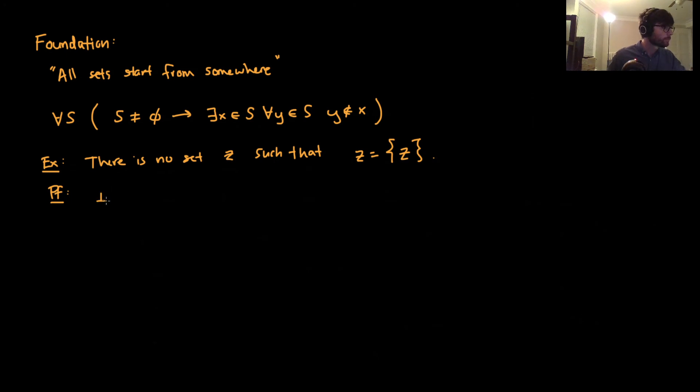Well, if there were, then we could apply foundation to the set Z. Then by foundation, what has to happen? Well, Z is not empty. Why? Because it contains itself as an element, so it's not empty. So by foundation, there exists an X in Z, so that for every Y in Z, Y is not an element of X. That's just exactly what the conclusion of foundation tells us.